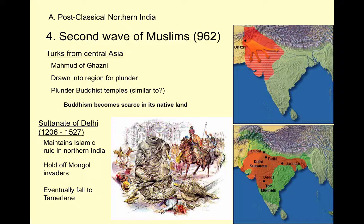Eventually the Sultanate of Delhi will fall to another wave of Central Asian nomads — Tamerlane comes in as the Sultanate weakens in the 1500s and is able to take control of it. Now let's talk about why conversions steadily increase through period 3. When the Umayyads come in there aren't many conversions, but by the end of the period about half of the people in northern India will have converted to Islam, giving roughly equal shares of Hindu and Muslim populations. Trade is one major factor — as Muslim merchants come in via the Silk Roads, Southwest Asia, or Indian Ocean trade, Hindu merchants know converting increases their trading opportunities.